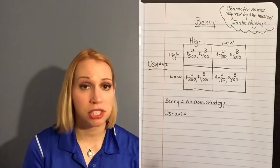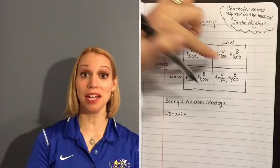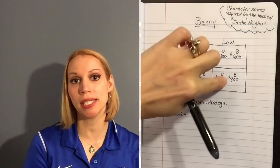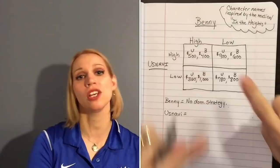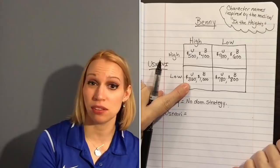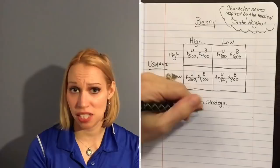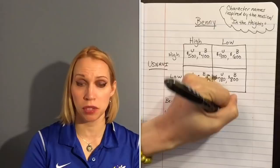What about Usnavi? If Usnavi charges high and Benny charges high, Usnavi makes $500. If Usnavi charges high and Benny charges low, Usnavi makes $900. If Usnavi charges low and Benny charges high, Usnavi gets $360. If both charge low, Usnavi gets $780. If Usnavi charges a high price, he gets $500 or $900. If he charges low, he gets $360 or $780. Since $360 is less than $500 and $780 is less than $900, Usnavi definitely has a clear dominant strategy — he earns more by charging a high price.